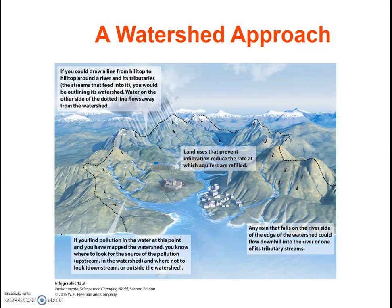To review: a watershed is all the land area that contributes water to a particular stream. This is an important definition — students commonly and mistakenly state it's where the water flows to, but it is more accurate to say it is where the water flows from. Synonyms for watershed include catchment and drainage basin. Study the diagram here and confirm that you understand how a watershed approach can help find the source of pollutants.